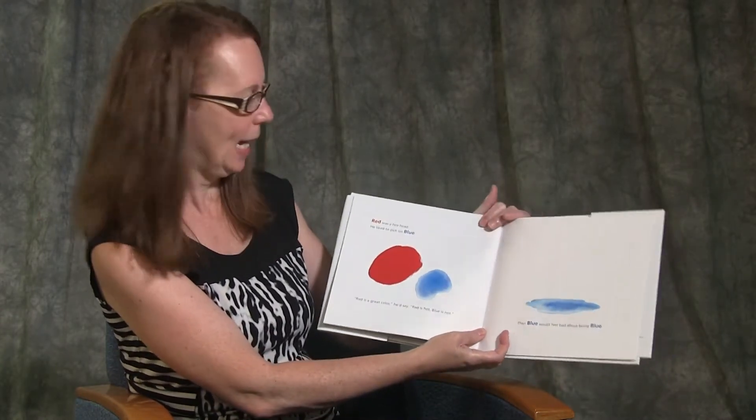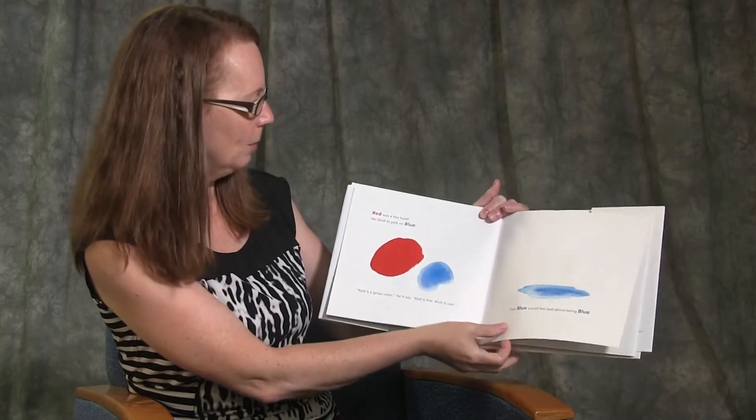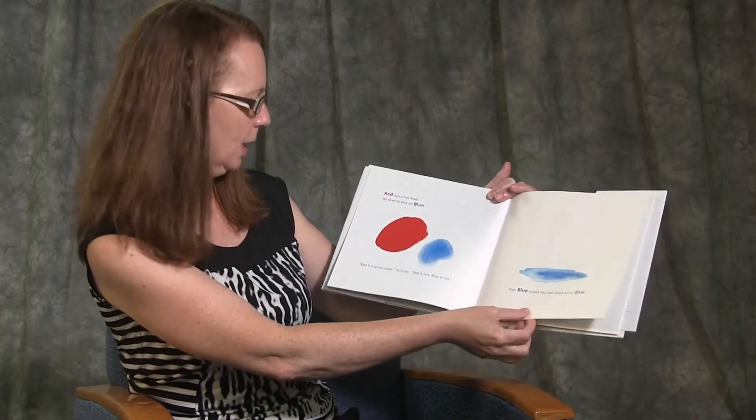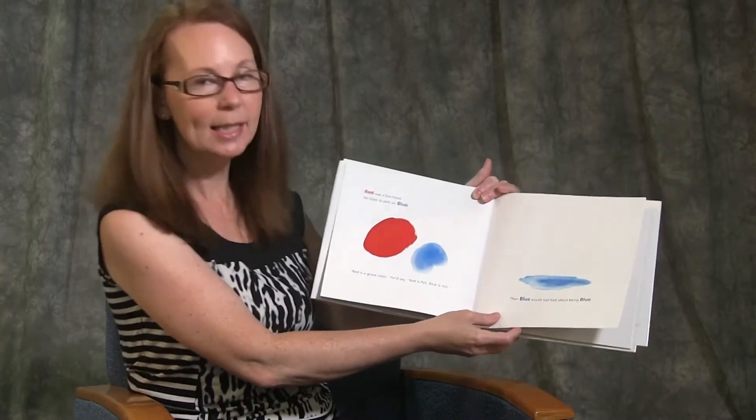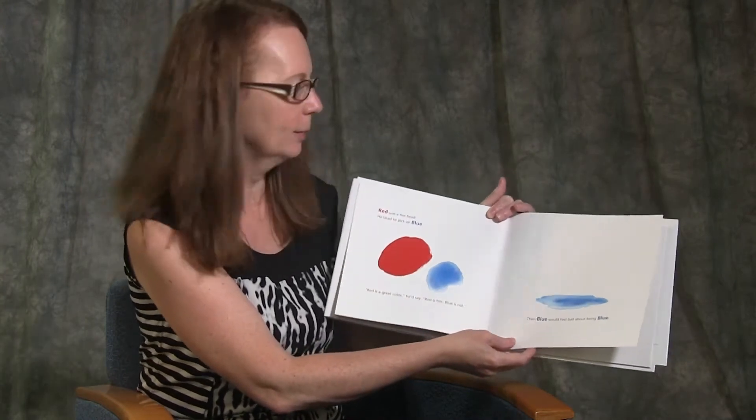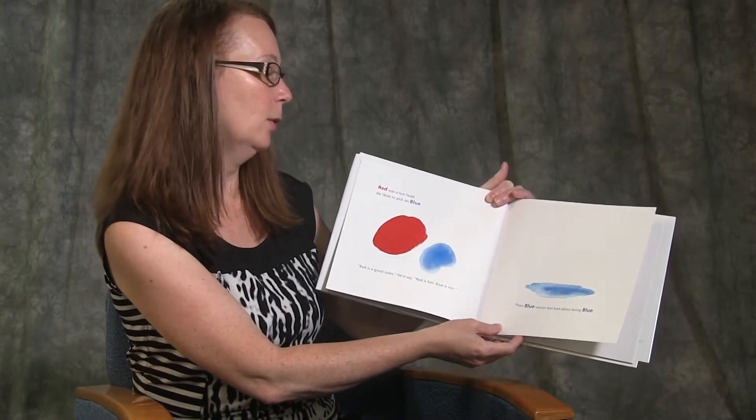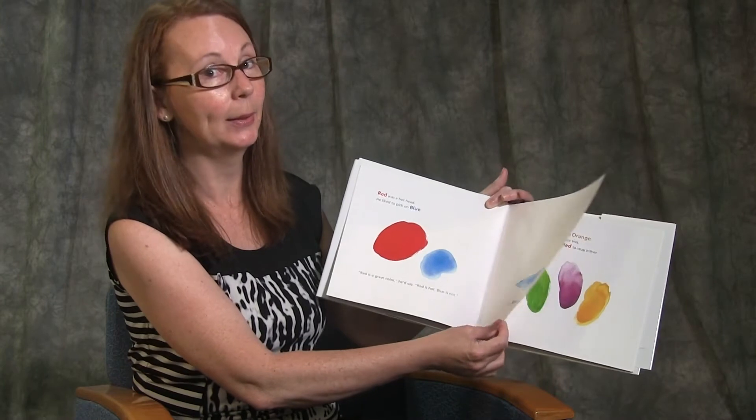Red was a hot head. He liked to pick on blue. Red is greater colour, he'd say. Red is hot, blue is not. Then blue would feel bad about being blue.